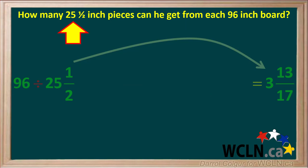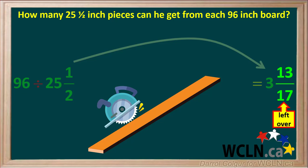So 96 divided by 25 and a half is equal to 3 and 13 seventeenths. And now we can answer the question: how many 25 and a half inch pieces can he get from a 96 inch board? The answer is he can get 3 full pieces, and he will have 13 seventeenths of an inch left over. This is good because the saw blade takes out close to 1 eighth of an inch of wood each time it makes a cut, so he will lose close to 3 eighths of an inch for 3 cuts. Since 3 eighths is just a little over 6 seventeenths, with 13 seventeenths of an inch he will have enough wood left over.